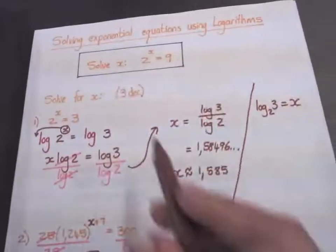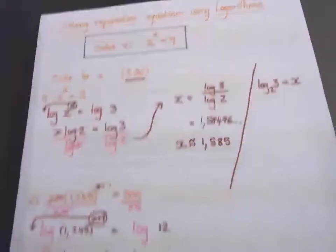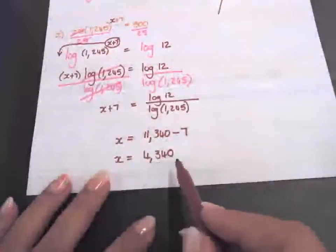They specifically stated that it should be 3 decimals, so you must put in 3 decimals.